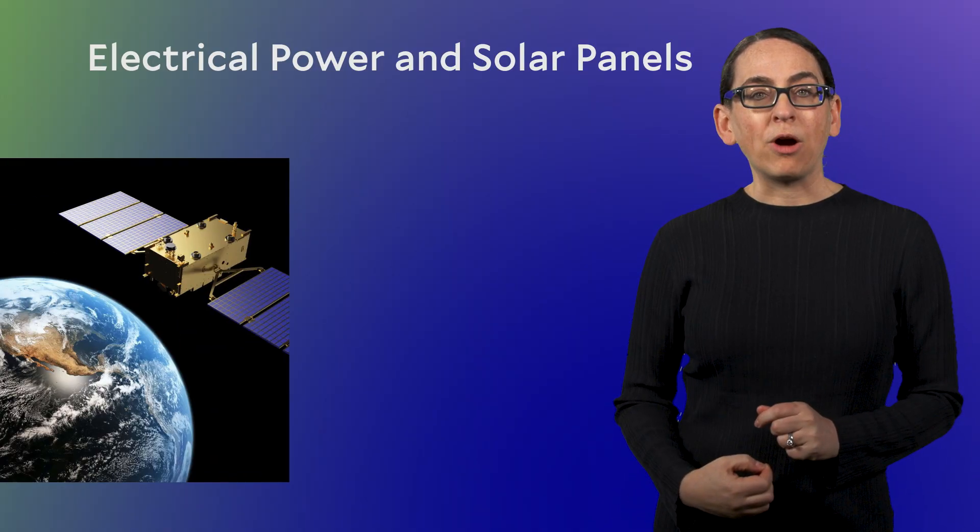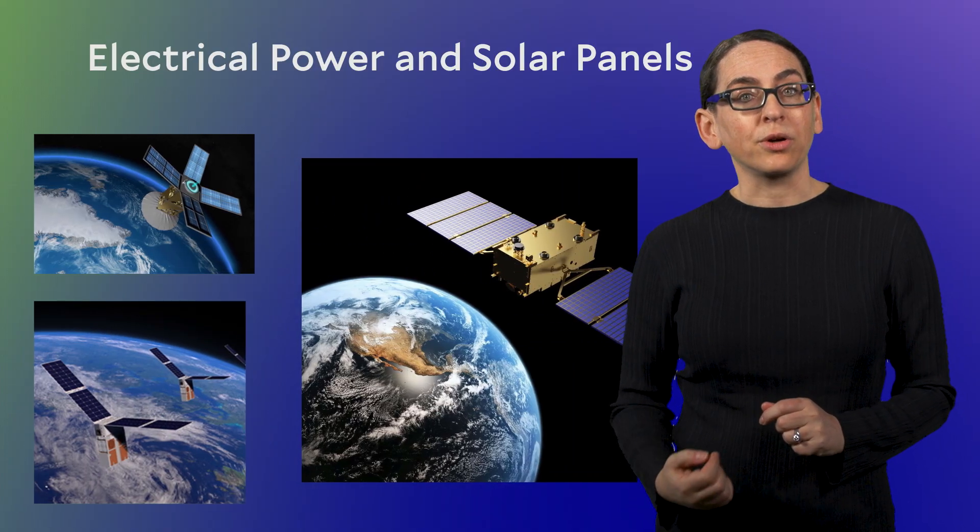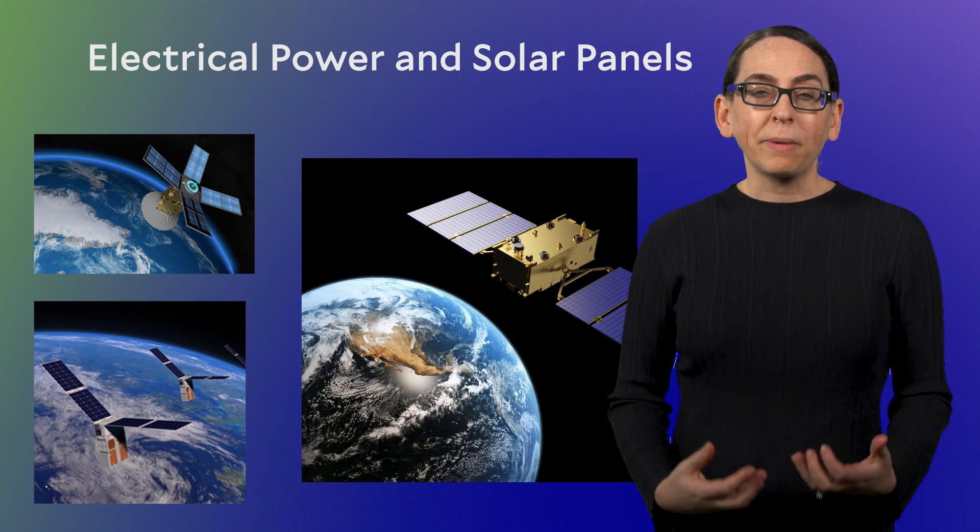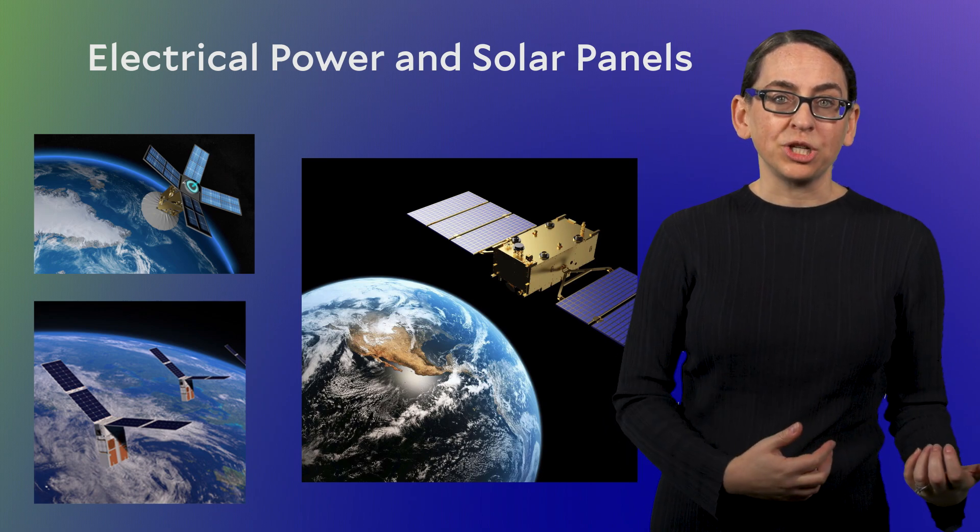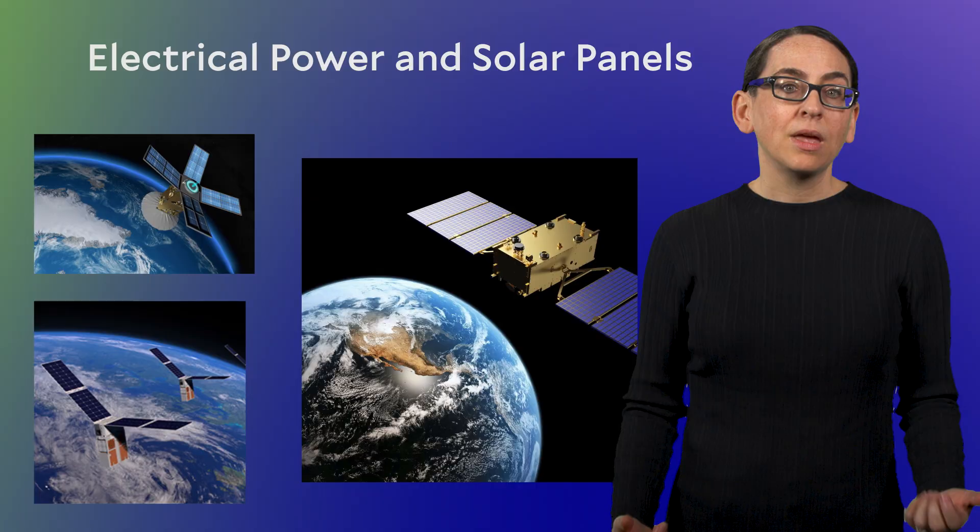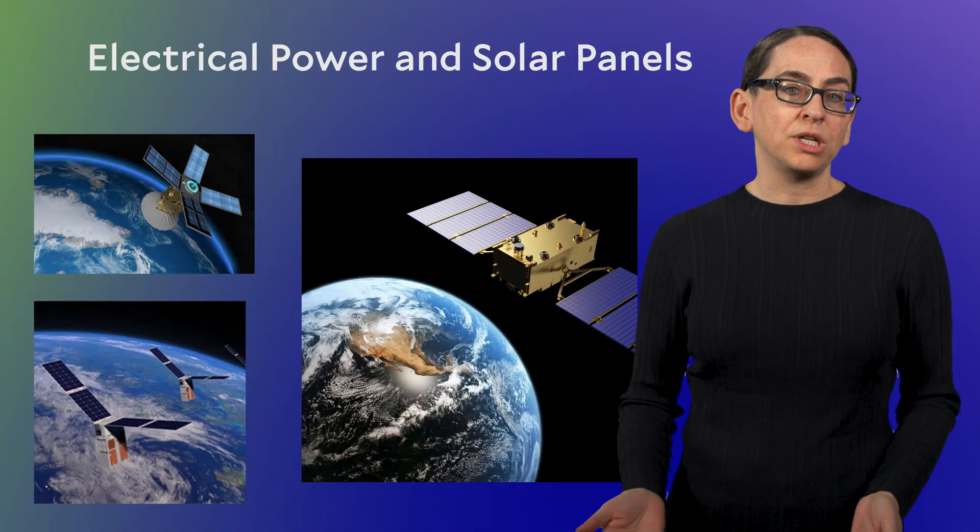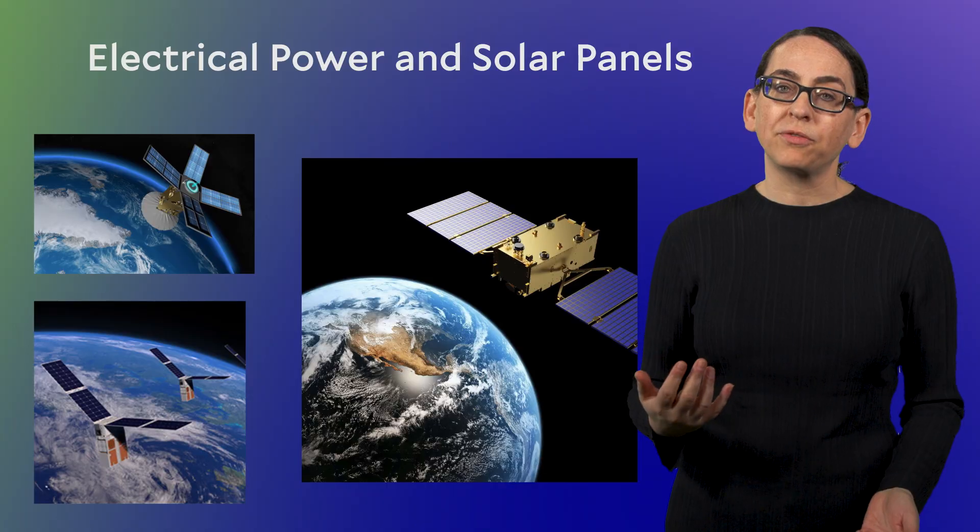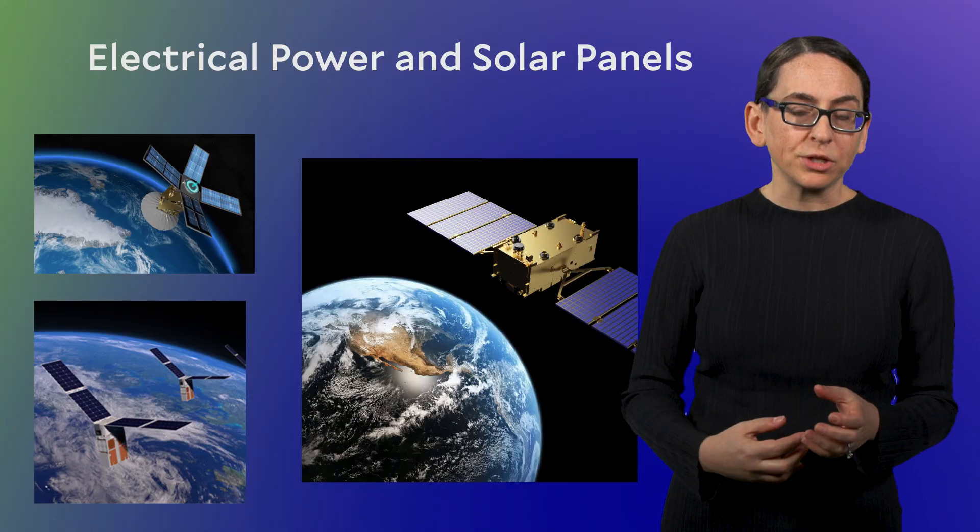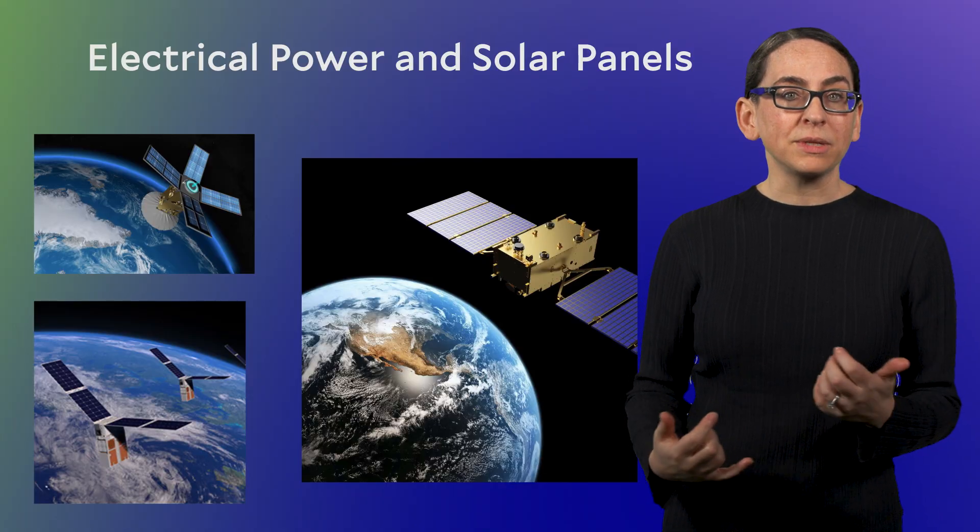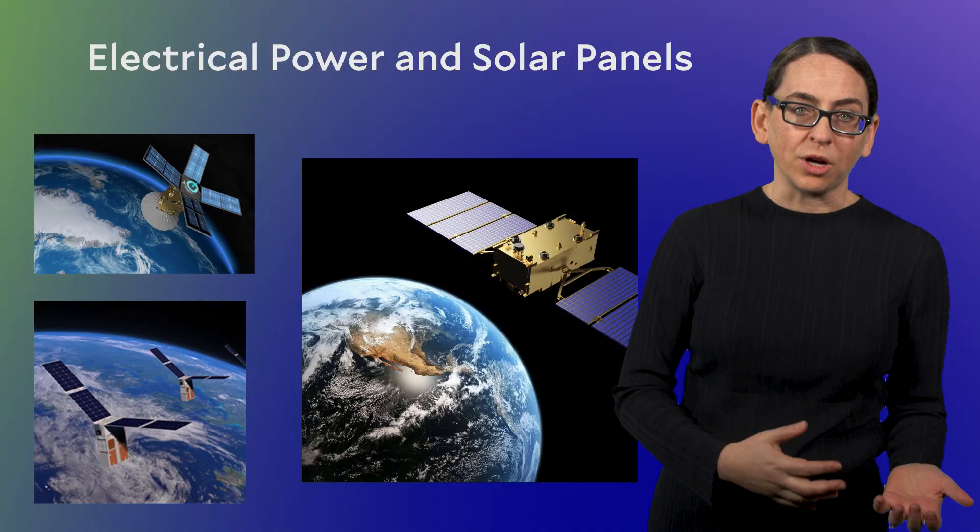The source of electrical power for satellites orbiting around the Earth are solar panels. Solar panels convert the Sun's energy into electricity. The solar panels on a satellite aren't super different than the ones you use or see on Earth. Solar panels are made from a special material that converts photons, light, coming from the Sun and turns it into electrons, electricity.